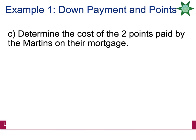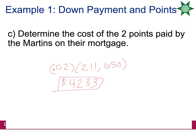Determine the cost of two points paid by the Martins. One point is 1%, so two points would be 2%. We need to find 2% of their mortgage, which is $211,650. Multiplying that out, they will have to pay the bank $4,233 up front in order to secure this loan.